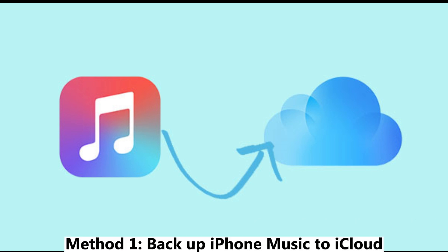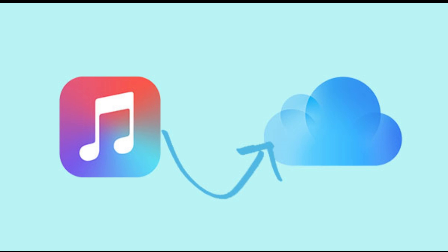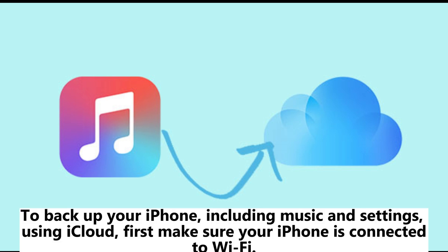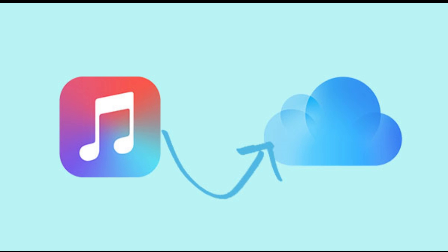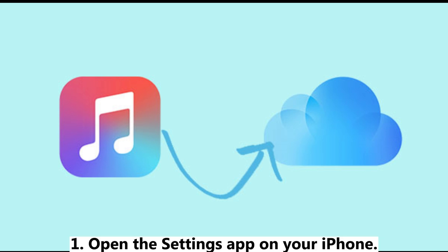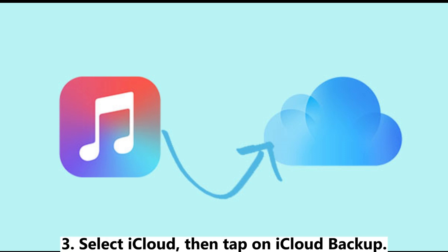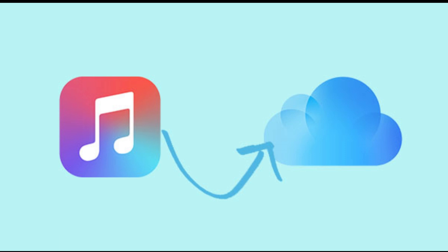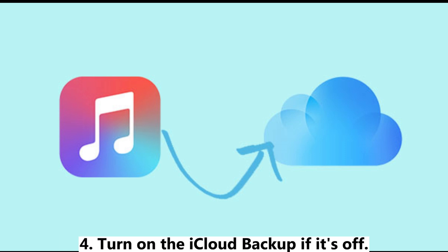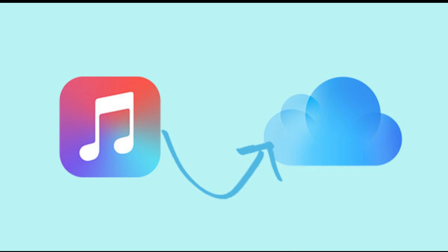Method 1: Backup iPhone music to iCloud. To backup your iPhone, including music and settings, using iCloud, first make sure your iPhone is connected to Wi-Fi. Open the Settings app on your iPhone. Tap on your name at the top. Select iCloud, then tap on iCloud Backup. Turn on the iCloud Backup if it's off.